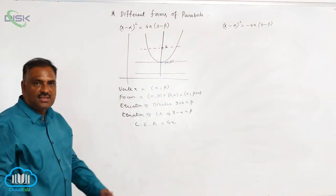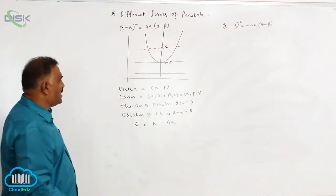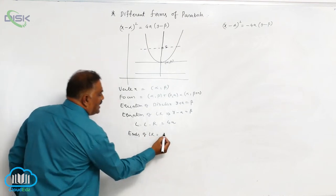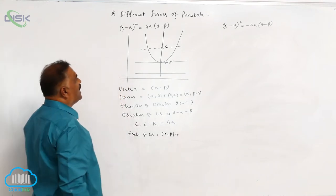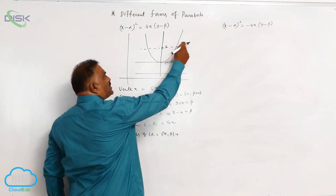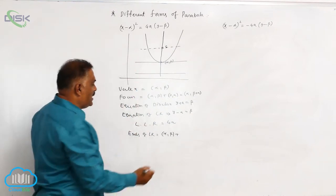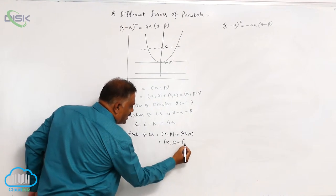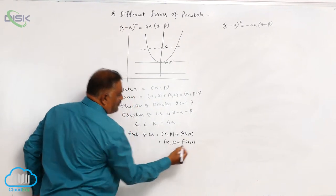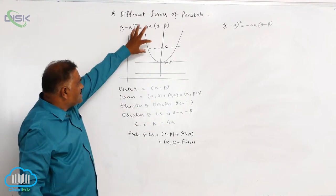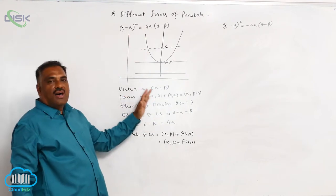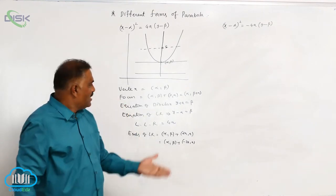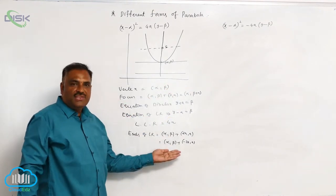The length of latus rectum is equal to 4a. In all four cases, the length remains the same. Then come the ends of latus rectum. Previously the endpoints are at (plus or minus 2a, a), so now they become alpha plus or minus 2a comma beta plus a. In all these cases, the origin is shifted from (0,0) to (alpha, beta), and because of that change, all values change accordingly.